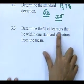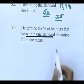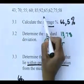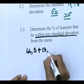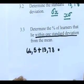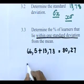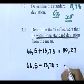Now we come to a very popular question: determine the percentage of learners that lie within one standard deviation from the mean. What you're going to do is take your mean — remember, your mean is your average, and 66.5 is our mean — and add one standard deviation. When I worked that out I got 80.28.